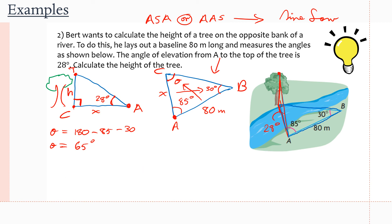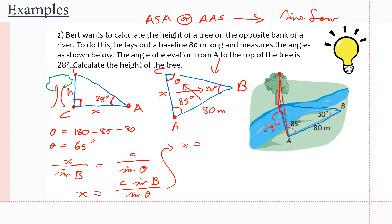Plugging in the numbers: side c is 80 meters, angle B is 30 degrees, and theta is 65 degrees. So x = 80·sin(30°) / sin(65°). Entering this into the calculator gives x ≈ 44.14 meters.